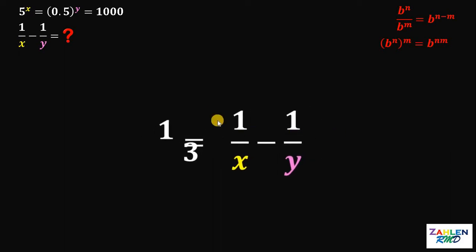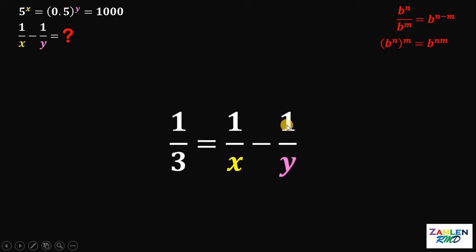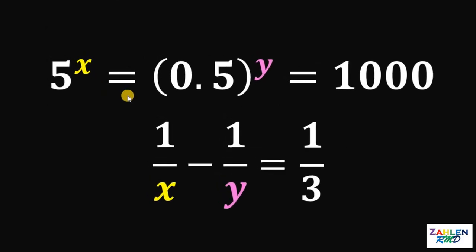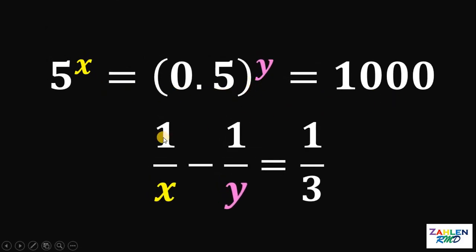Now we want to evaluate 1 over x minus 1 over y, so we divide both sides by 3. Therefore, we get that 1 over x minus 1 over y is equal to 1 over 3. So if 5 raised to x equals 0.5 raised to y equals 1000, then the value of 1 over x minus 1 over y is just 1 third. And as always, we are done.